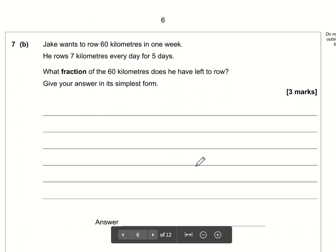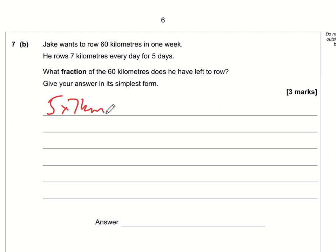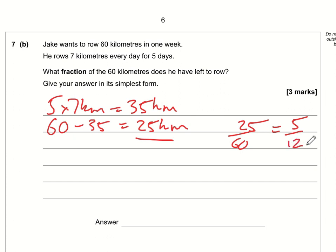Part B. Jake wants to row 60 kilometers in a week. He rows 7 kilometers every day for 5 days. After 5 days he's done 5 lots of 7 kilometers which is 35 kilometers. So what has he got left to do? Well he's got 60 take away 35 kilometers left which is 25 kilometers. So what fraction of the 60 kilometers does he have left to row? Well he has 25 out of 60. But this fraction can be broken down because we've got two numbers that are both divisible by 5. 25 divided by 5 is 5, 60 divided by 5 is 12. So he has 5 twelfths of his mileage goal still to go.